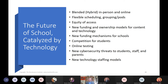We're seeing new funding and ownership models for content, new funding mechanisms for schools, and competitions between online, blended, and traditional learning. We're seeing a lot more online testing, and we're hoping AI predictive analytics will reduce one-shot tests in favor of continuous assessment based on what students do on the computer. There are tremendous cybersecurity threats, and we're seeing new technology staffing models — including fractional chief technology officer services — to support both technology at home and in the university.